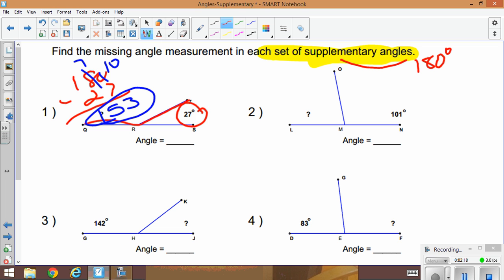Okay, angle LMO is supplementary to NMO. So I'm going to take 180 degrees minus 101. So 10 minus 1 is 9, 7 minus 0 is 7. So this missing angle in here is 79 degrees.